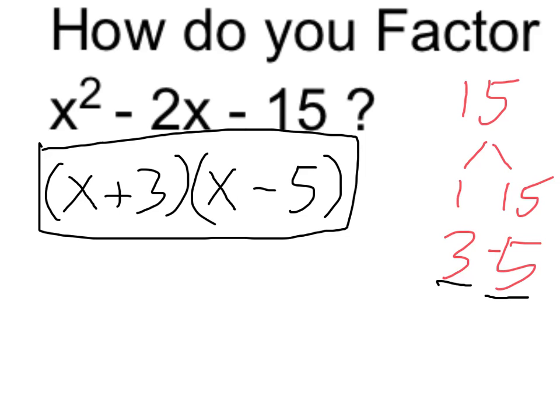Now let's do a quick check to see that when I FOIL, I get back to the original. If I do x plus 3 times x minus 5, x times x gives me x squared.